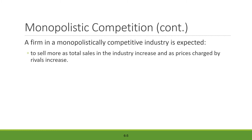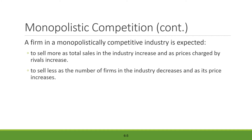The second expectation is that a firm will sell less as the number of firms in the industry increases and as its own price increases — the opposite of the first. When more firms enter the industry, each firm's market share declines. Similarly, if the firm raises its own price, demand for its product will decrease. These are the two key expectations from a firm under monopolistic competition.